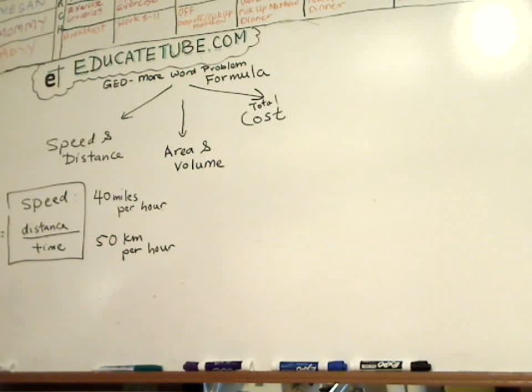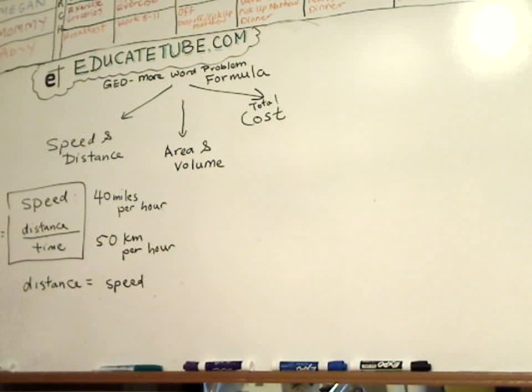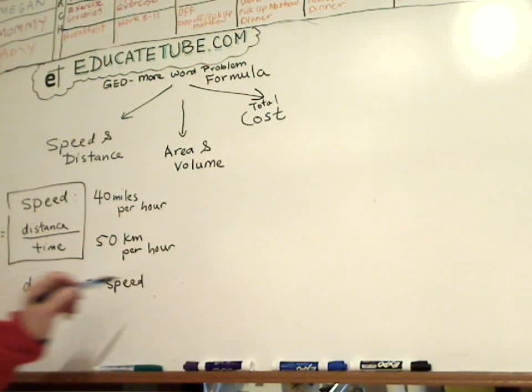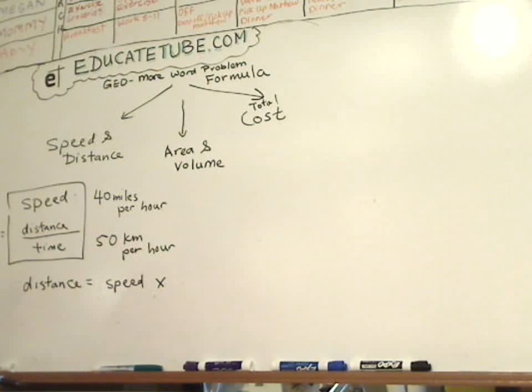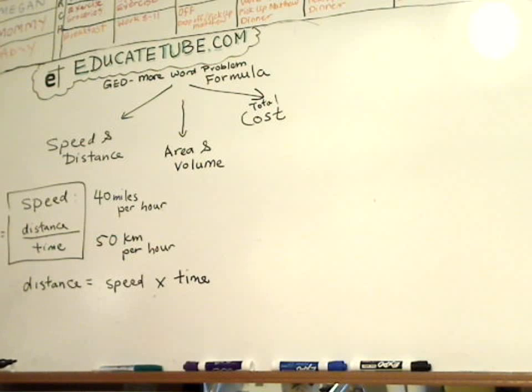And we can actually rearrange it. Let's say, if you want to find out distance of something, we need to know the speed, multiply by the unit of time. And we'll figure out the distance. It makes sense. If you think about it, if I say, I drove 50 miles per hour,